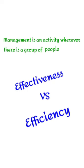Another example: the manager was successful in reducing the cost, but instead of producing 5,000 units, only 3,000 units were produced. The manager reduced the cost but sacrificed completeness. In this example, the manager was efficient but not effective. So from both examples, we understand that effectiveness and efficiency are both important — they are two sides of the same coin. Poor management results from both inefficiency and ineffectiveness.